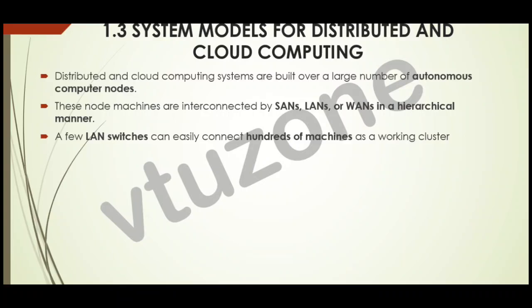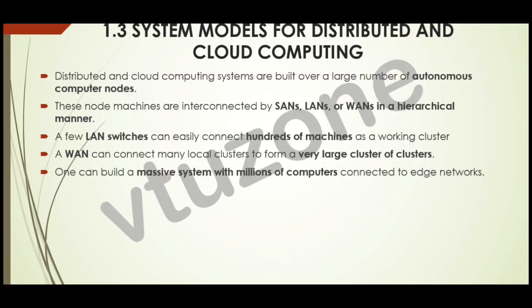A few LAN switches can easily connect hundreds of machines as a working cluster — with a LAN we can group hundreds of computers to form one big system. A WAN can connect many local clusters to form a very large cluster of clusters, helping connect many small groups into one huge system. One can build a massive system with millions of computers connected to edge networks. These massive systems are highly scalable and can reach web-scale connectivity, easily growing bigger and connecting across the internet.